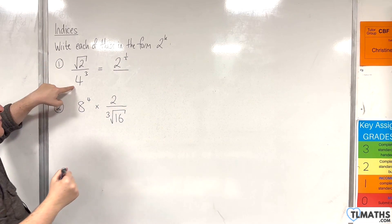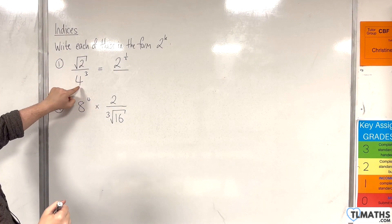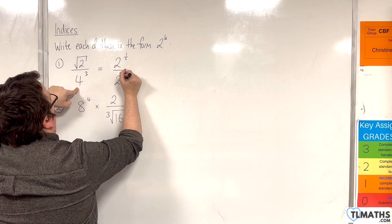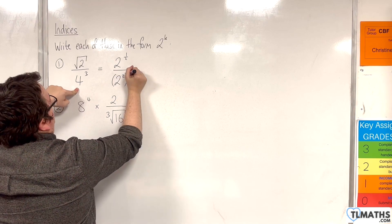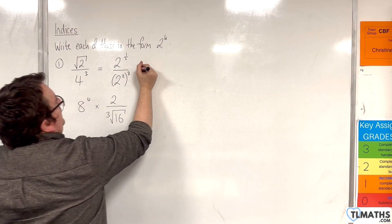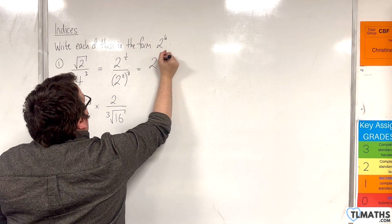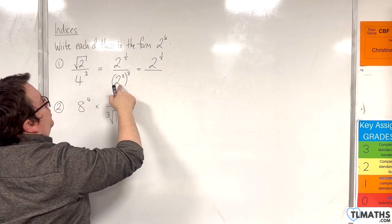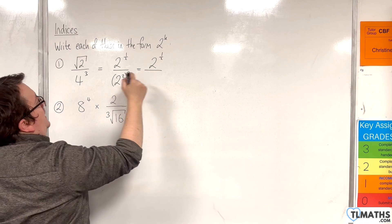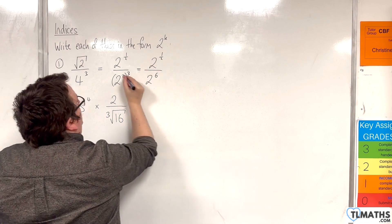And in the denominator, we've got 4 cubed. Now 4 is 2 squared, so I'm going to write that as 2 squared cubed. So I'll leave the numerator alone. 2 squared cubed is 2 to the power of 6, because the 2 and the 3 multiply.